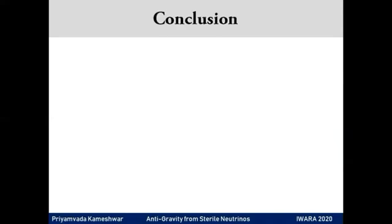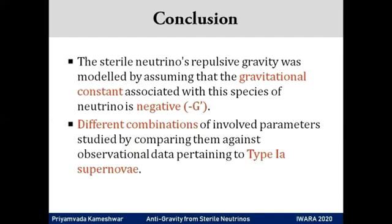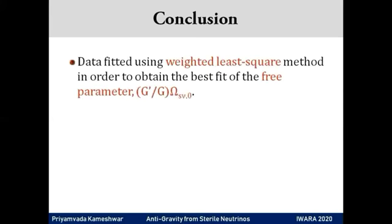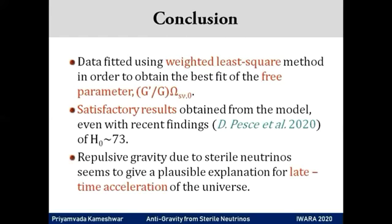I would like to summarize at this juncture. We started out by assuming that sterile neutrinos cause repulsive gravity, which was represented by a negative gravitational constant, and analyzed the model by drawing a comparison with observational data. The data was fitted according to best fit of the free parameter. We saw from the plots that quite satisfactory results were obtained, indicating that repulsive gravity from sterile neutrinos could be a plausible explanation for late-time acceleration of the universe.